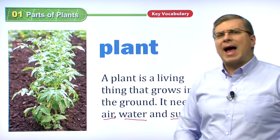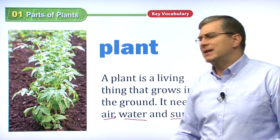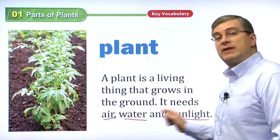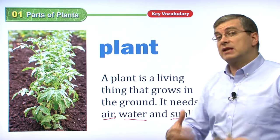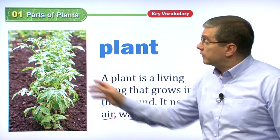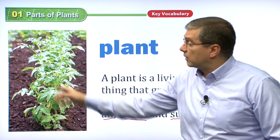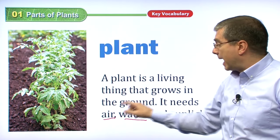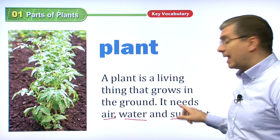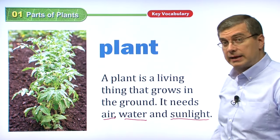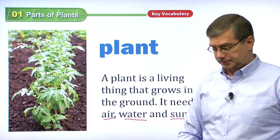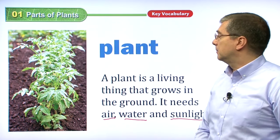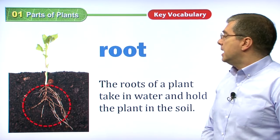So how does a plant get these things? In this lesson we'll talk about the different parts of the plant that help it get air, water, and sunlight.